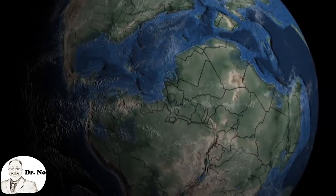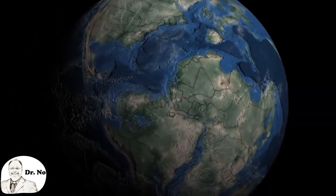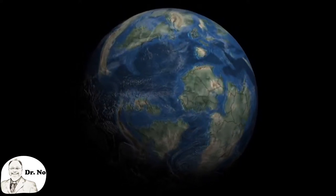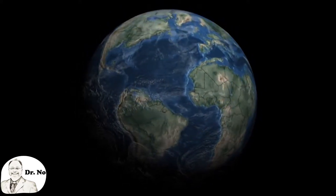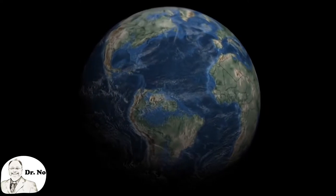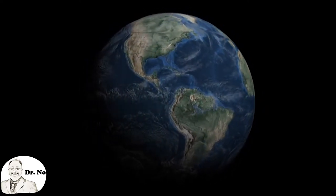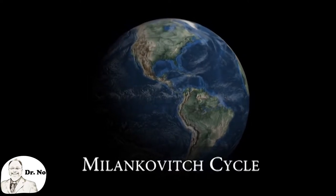Milankovitch cycles are regular changes in Earth's climate over tens and hundreds of thousands of years that were caused by shifts in Earth's orbit. They are named after Serbian scientist Milutin Milankovitch, who proposed such cycles in the early 20th century.